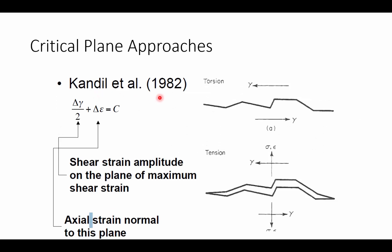One of the early approaches is by Kandel, prepared in 1982. In this approach, there is a linear relationship between the shear stress amplitude and the normal stress range, where the addition of those two equals C, a constant material property. This is essentially telling us that the combination of these loading conditions is going to tell us what orientation our crack will grow.